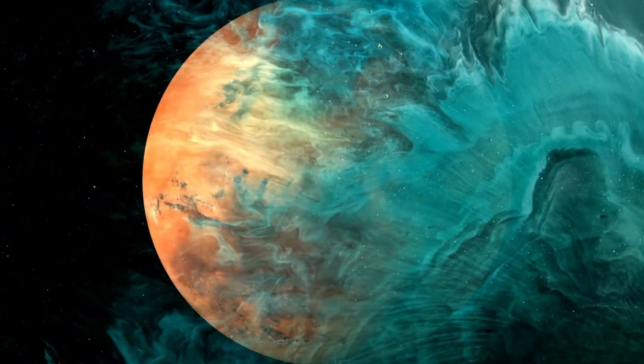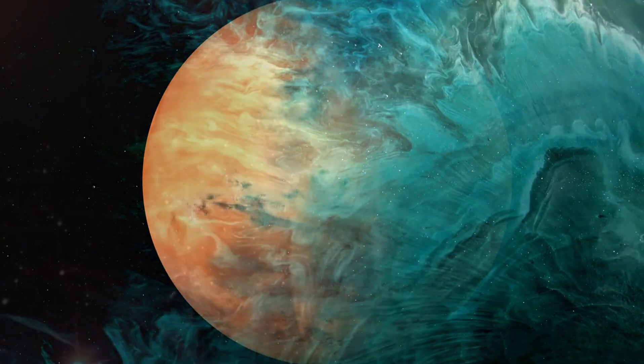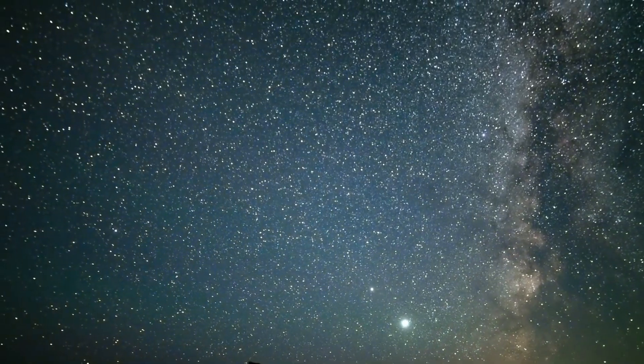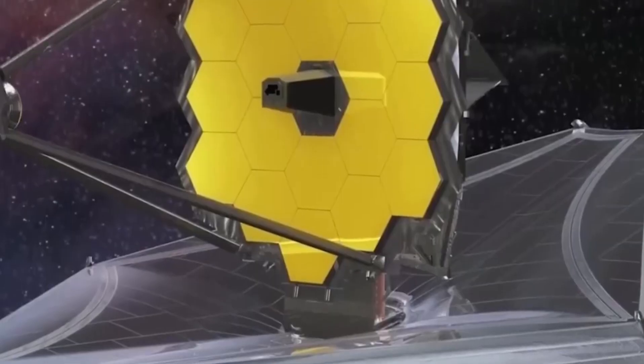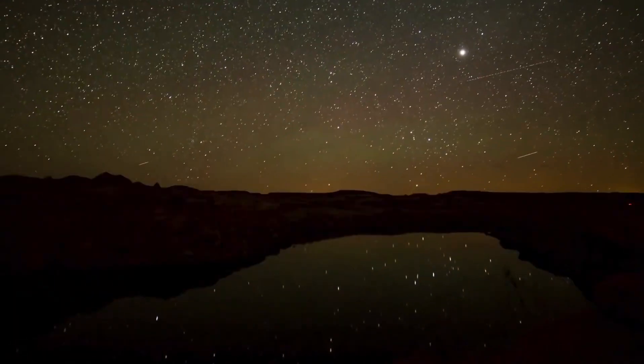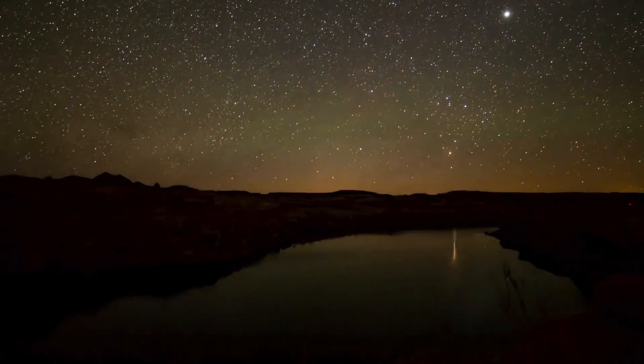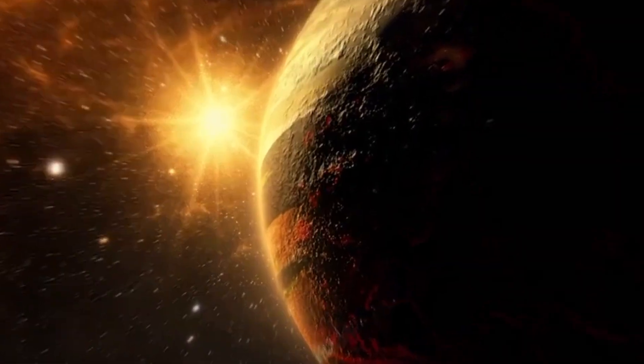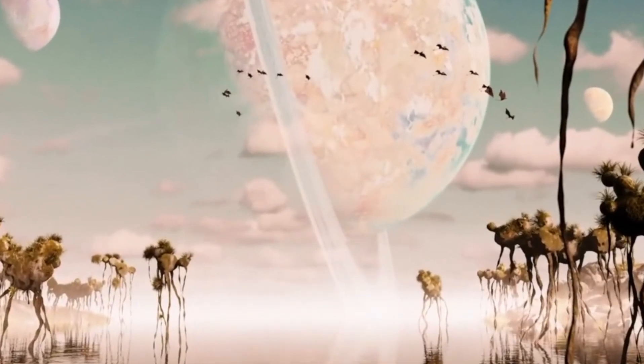This black hole exists where gravity's grip is so intense that nothing, not even light, can escape its clutches. According to Einstein's theory of general relativity, the collapse of a massive star creates a compact mass that warps the very fabric of space-time, giving rise to a black hole.